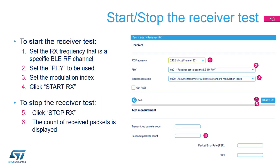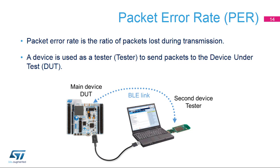The receiver test is used to receive packets from another device. The frequency and modulation can be selected. The reception starts when Start RX is pressed, and the number of valid packets received is counted until Stop RX is pressed.